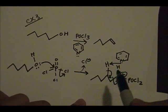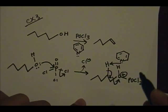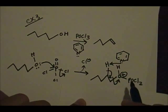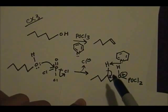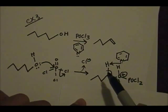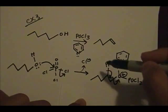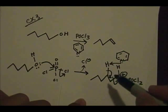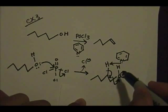Since the oxygen now has three bonds, it carries a positive charge. This is the second and final step: the leaving group is about to get kicked off. As you kick off the leaving group you generate your double bond, and pyridine picks up this H. The H you eliminate to form the double bond is the one adjacent to the carbon bearing the leaving group.